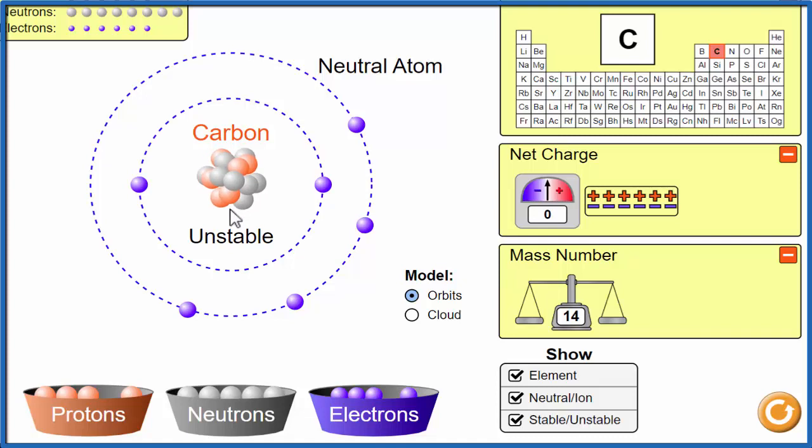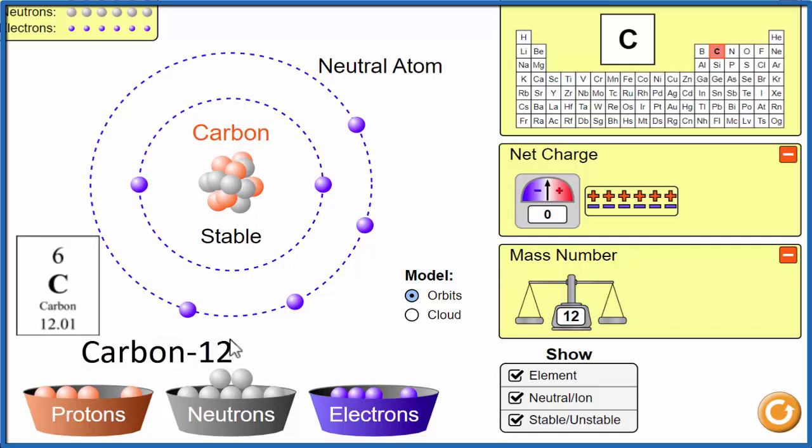Let's add one more. Now it's unstable. We have six protons and eight neutrons, carbon-14, but it's unstable, which means it might break down, it might emit some radiation. In nature, there's a trace of carbon-14. There's some carbon-13, but most of it's carbon-12. That's why the average atomic mass is 12.01 on the periodic table.